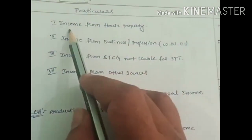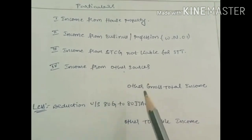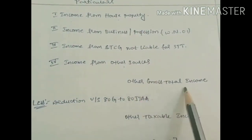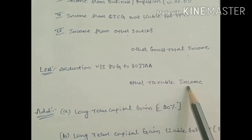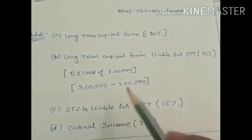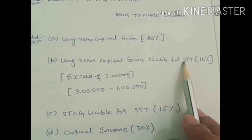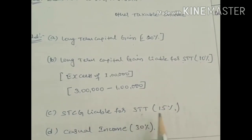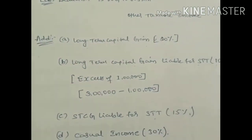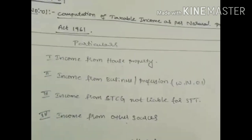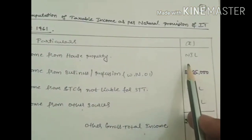Step one is computation of taxable income as per normal provision of IT Act 1961. There are four heads of income: income from house property, income from business and profession, income from short-term capital gain not liable for STT, and income from other sources. The aggregate gives gross total income; after deductions under Section 80G to 80JJA, we get total taxable income. Income from house property — no information provided — write as nil.